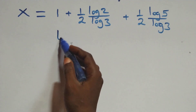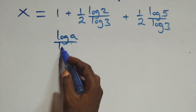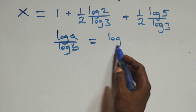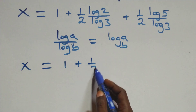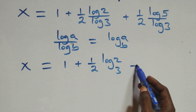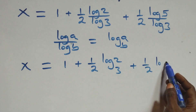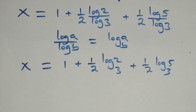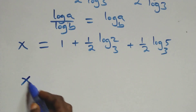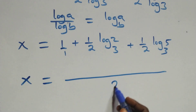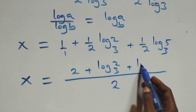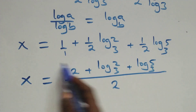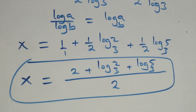Here we apply the change of base formula: log a over log b is the same as log a to base b. So what we have becomes x equals to 1 plus one-half log 2 base 3, plus one-half log 5 base 3. We bring this together as one fraction, giving x equals to 2 plus log 2 base 3 plus log 5 base 3, all over 2.